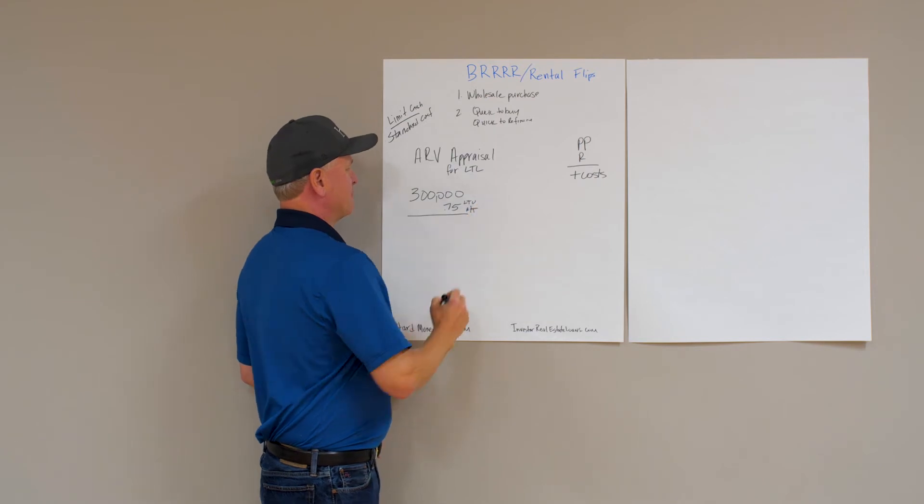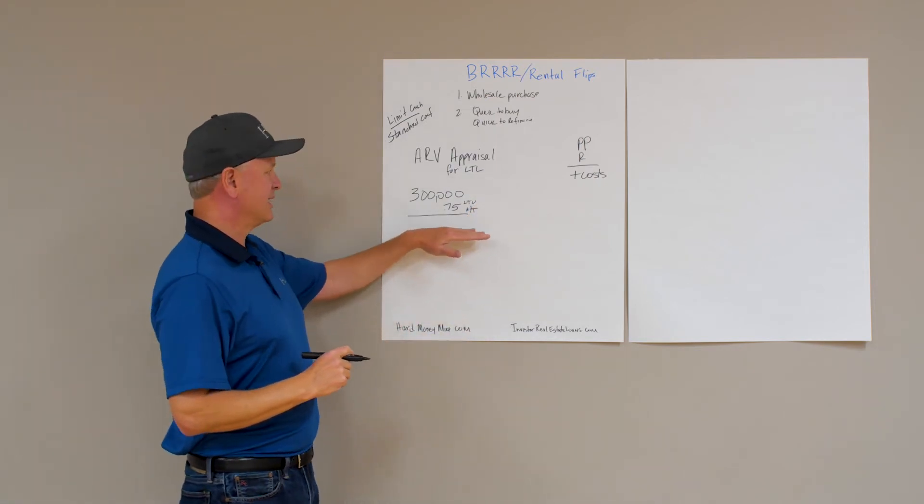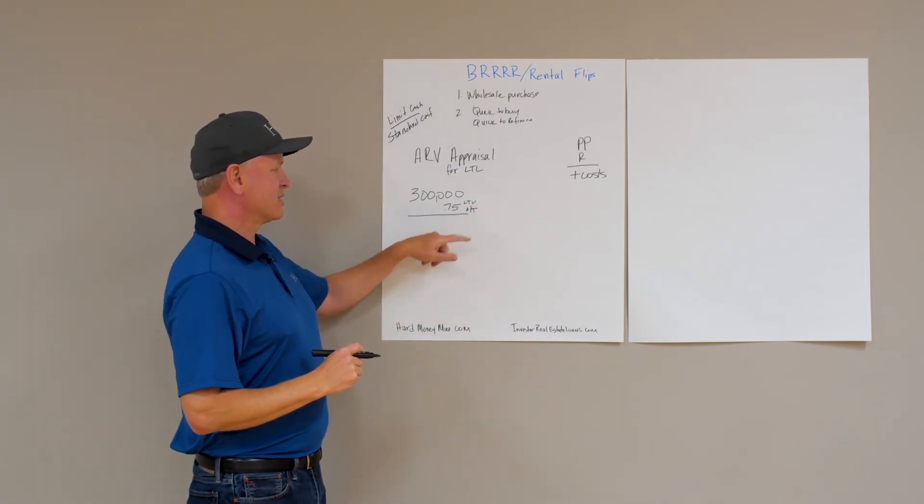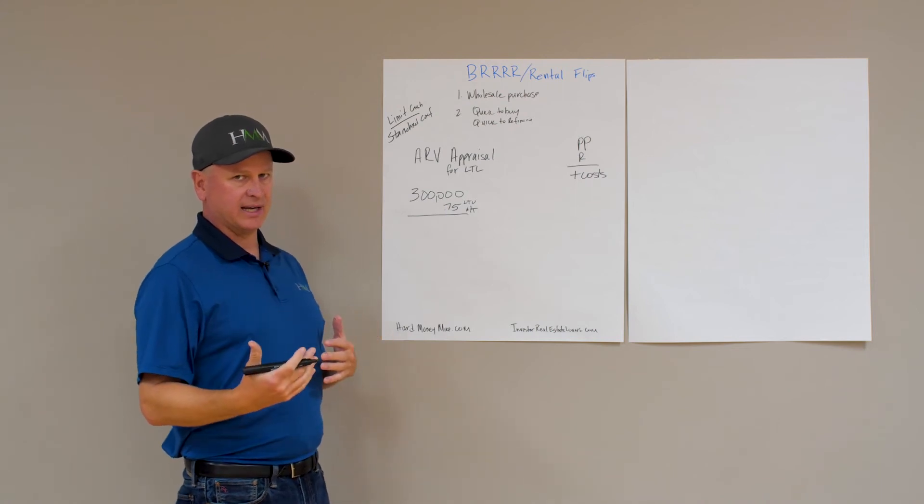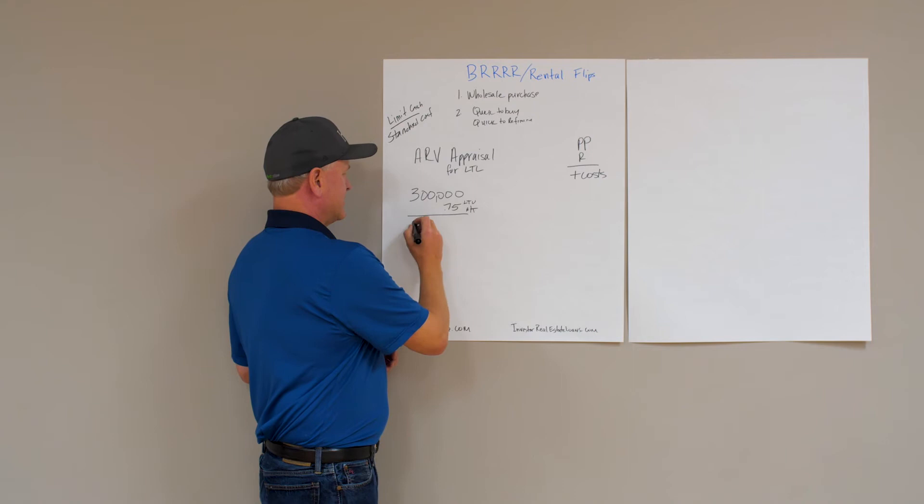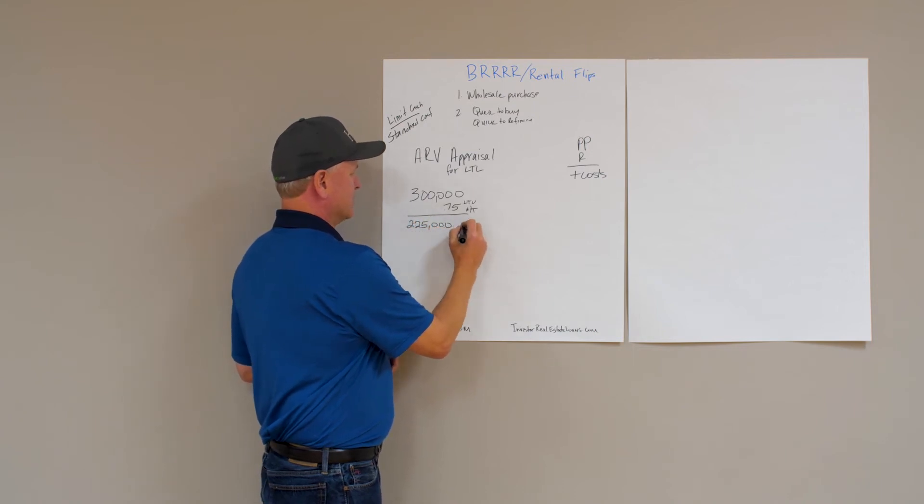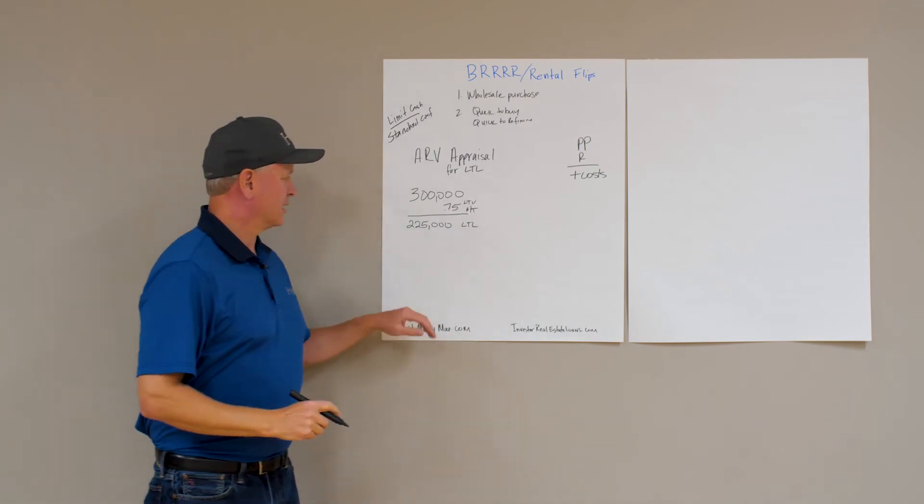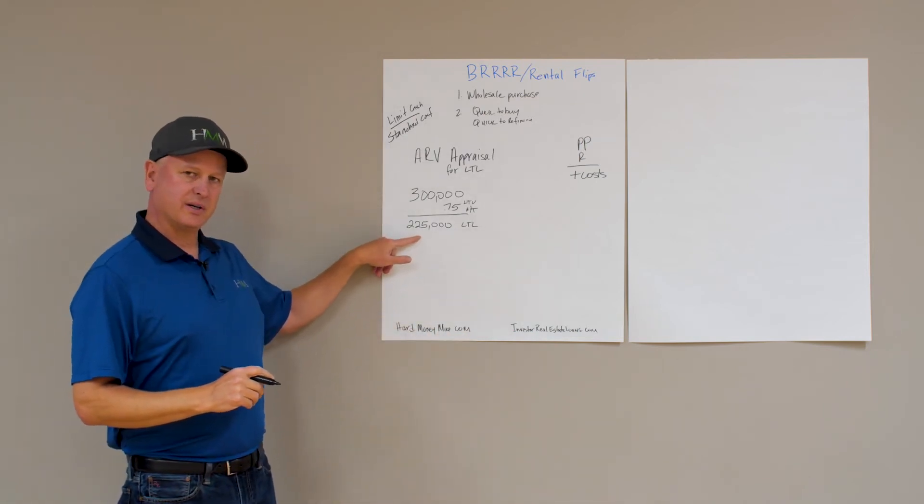This is 75% long-term value. As long as you set this up properly—and we'll go through that in another video—making sure it's a rate-and-term refinance on your property, your long-term loan could go all the way up to $225,000.